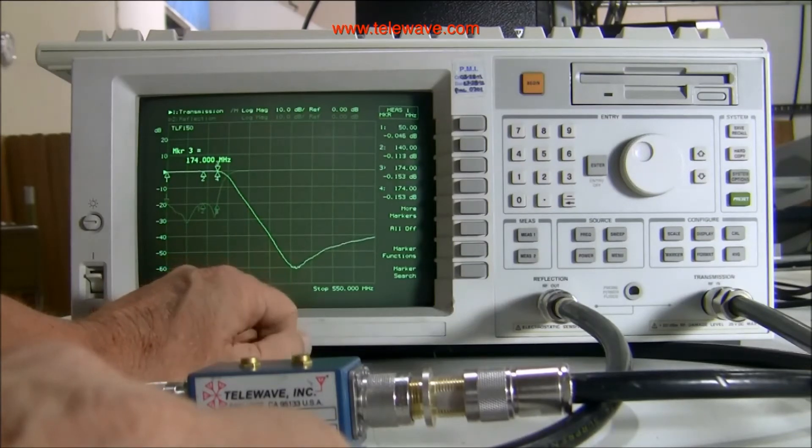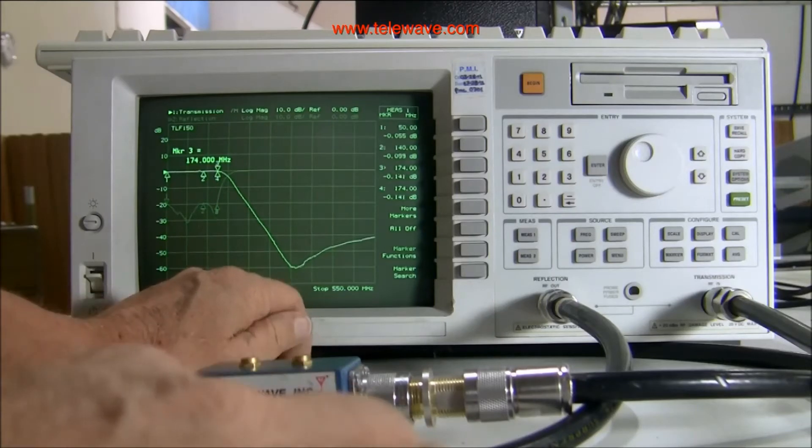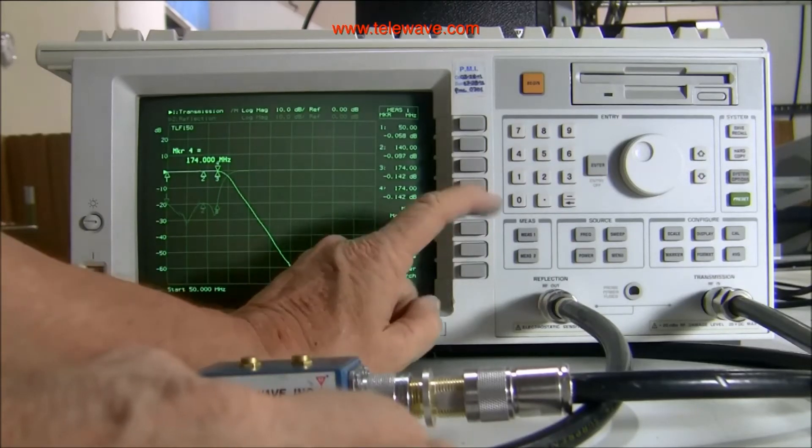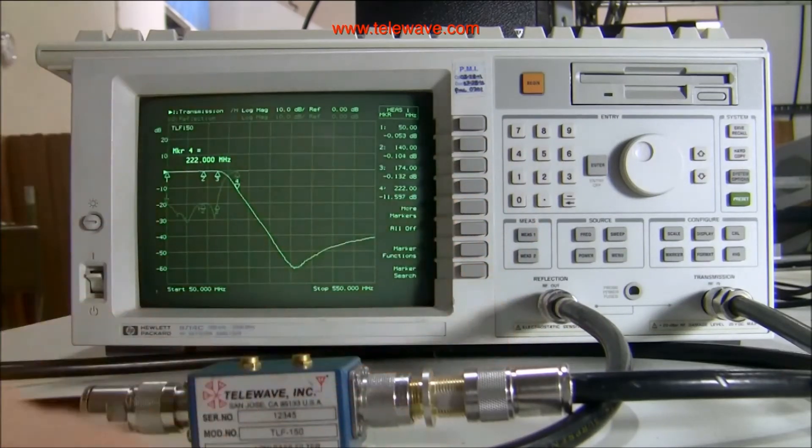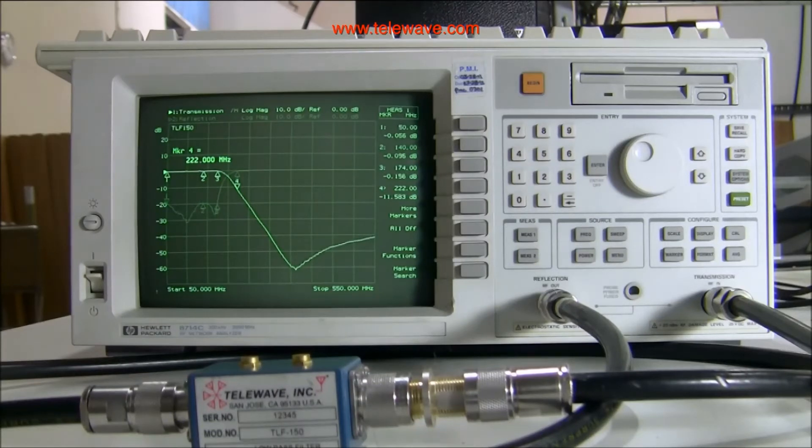And then right now we're at the same frequency on number four. So we're going to change that to 222 megahertz, which is the lower edge of the 222 megahertz amateur radio band. So you can see that we're at 0.05, 0.1, 0.15, and about 11 dB respectively for those four markers.